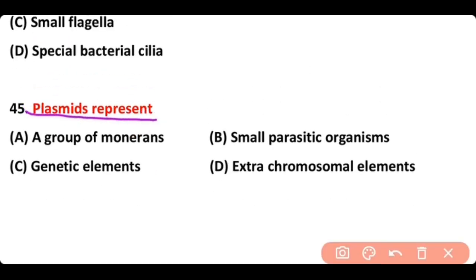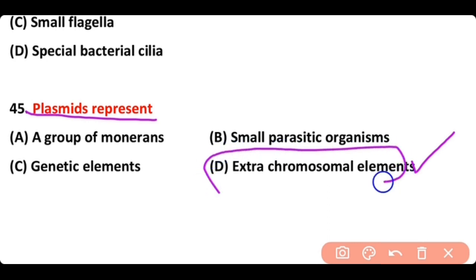Question number 45: Plasmid represents — a group of Monera, small parasitic organisms, genetic elements, or extra-chromosomal elements? The correct answer is option D. Plasmids are extra-chromosomal elements present in bacteria.